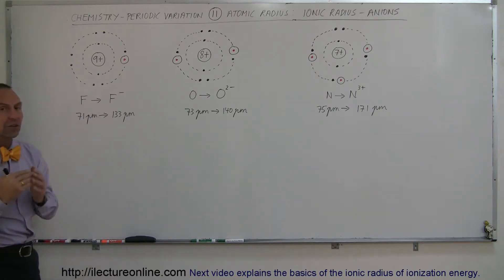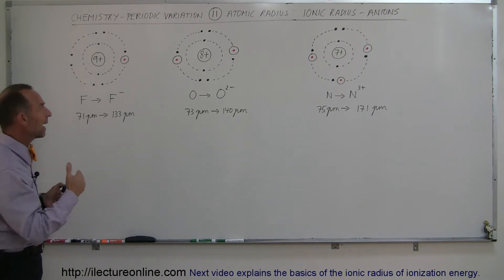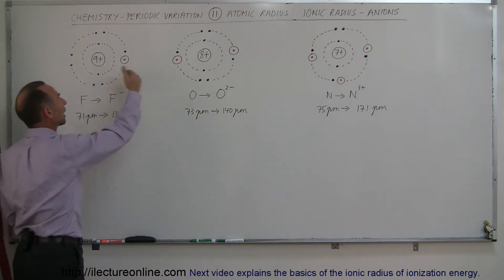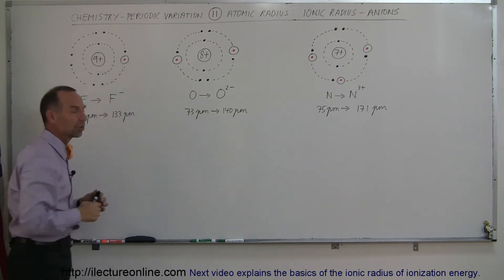But anions is different. Anions are negatively charged ions. They become anions by adding more electrons. Starting with fluorine, for example, we turn fluorine atoms into fluorine ions by adding one extra electron.